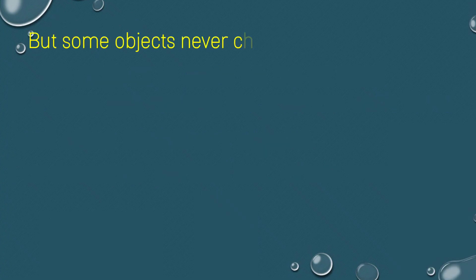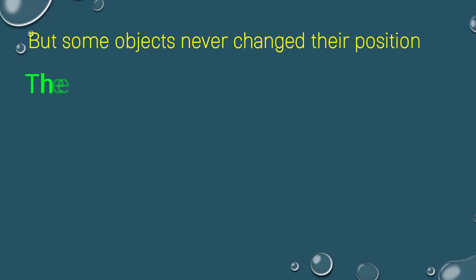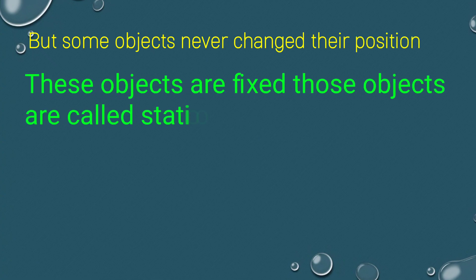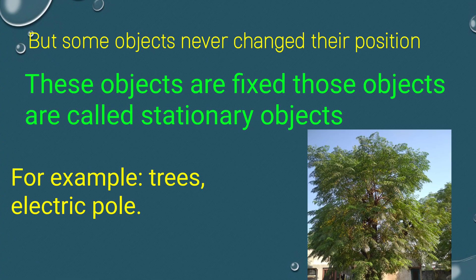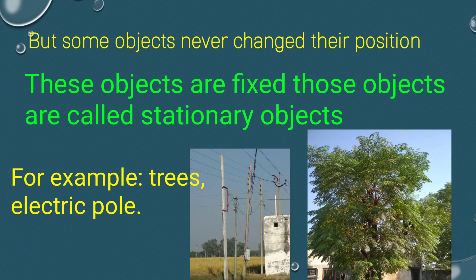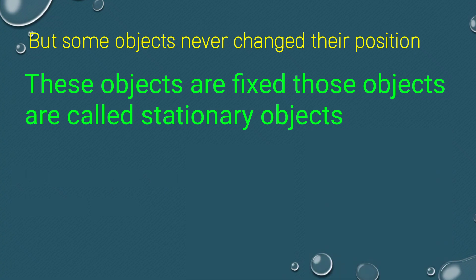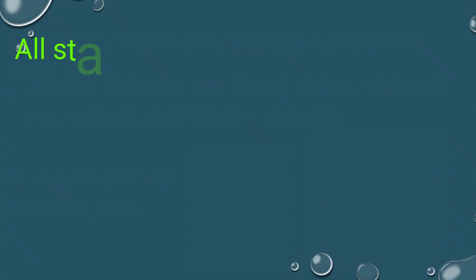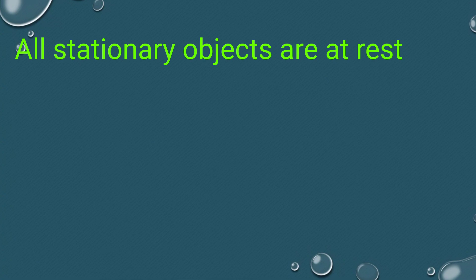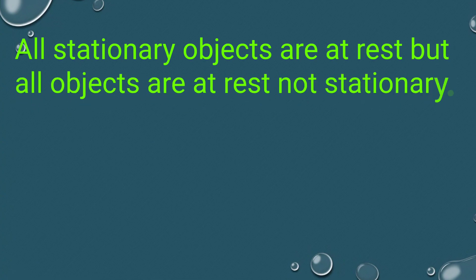But some objects never change their position. These objects are fixed, and they are called stationary objects. For example, trees and electric poles — these objects never change their position. All stationary objects are at rest, but not all objects at rest are stationary.